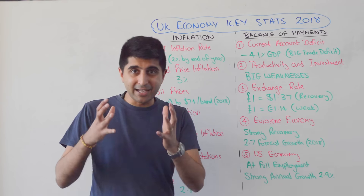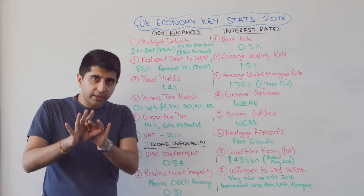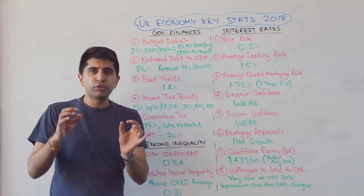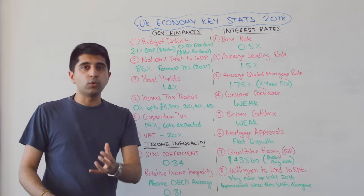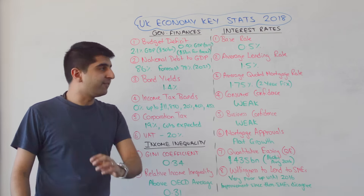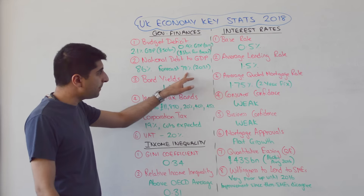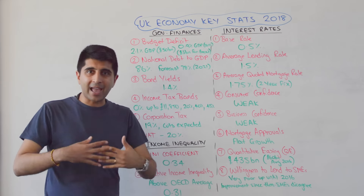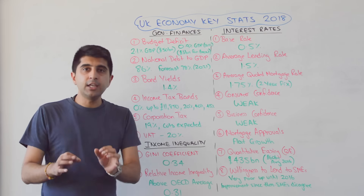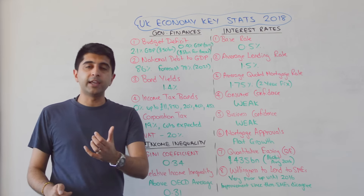Let's talk about government finances. The current UK budget deficit stands at 2.1% of GDP — in raw figures that's £50 billion — forecast to fall to 0.9% of GDP by 2021, reflecting the continuation of austerity policy. Philip Hammond has set aside £3 billion in case of a Brexit shock, available as fiscal stimulus if needed when we leave the EU. National debt stands at 86% of GDP, forecast to fall to 78% by 2021. Bond yields — the average yield on a 10-year government bond — stand at 1.4%, meaning the cost of borrowing for the UK government is currently quite low.